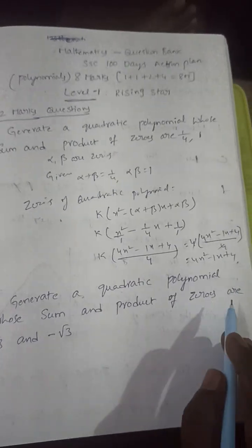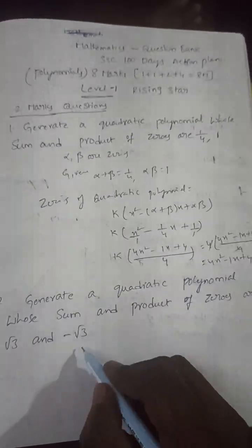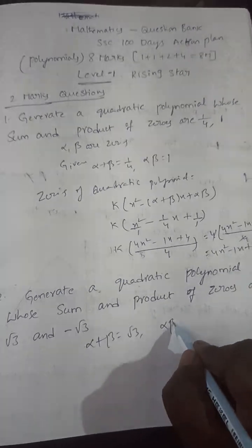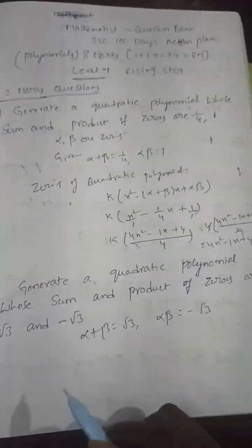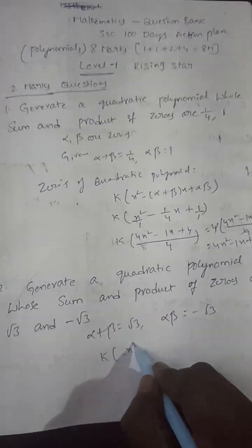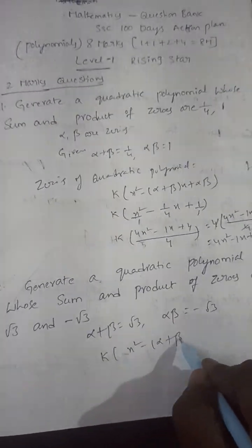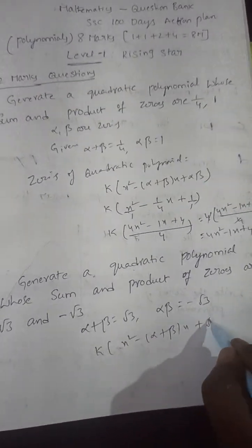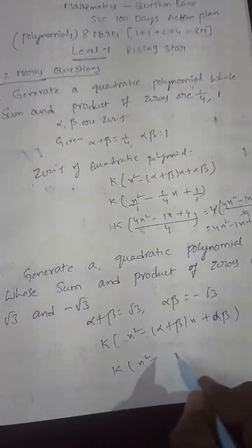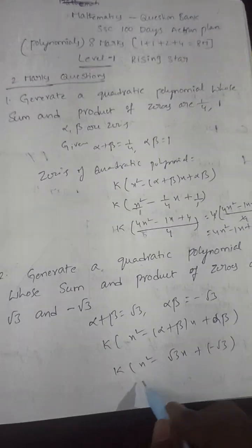Next question: generate a quadratic polynomial whose sum and product of zeros are root three and minus root three. So alpha plus beta equals root three, alpha into beta equals minus root three. Using the general form k(x² − (alpha+beta)x + alpha·beta), substituting gives x² − √3·x − √3, where k equals one.